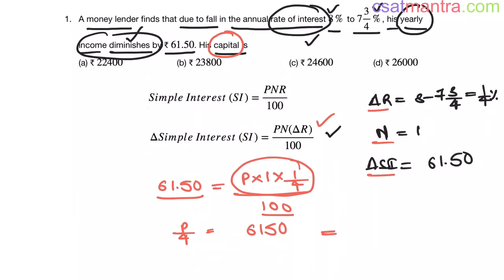Now 100 into 61.50, that is 6150. This implies P is equal to 4 into 6150. 4 times 6 is 24,000, 4 times 1 is 400, so that is 24,600. Our answer is C.